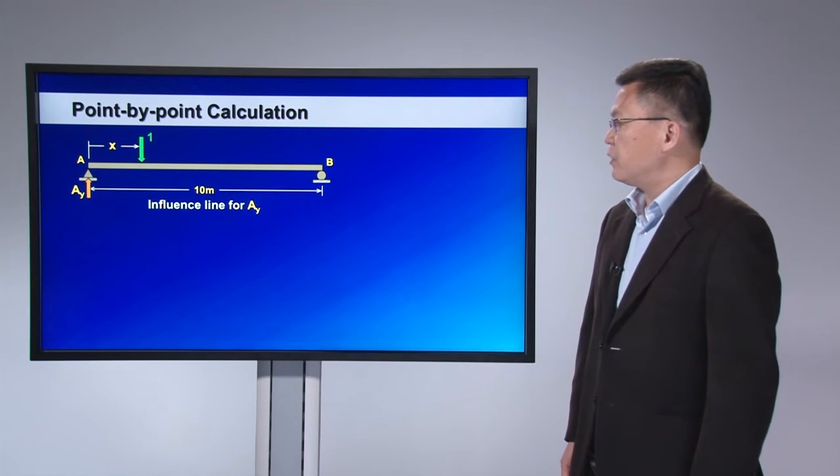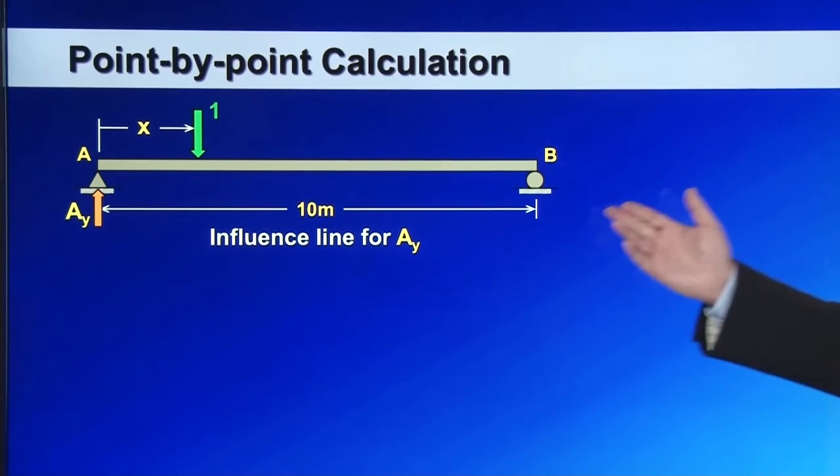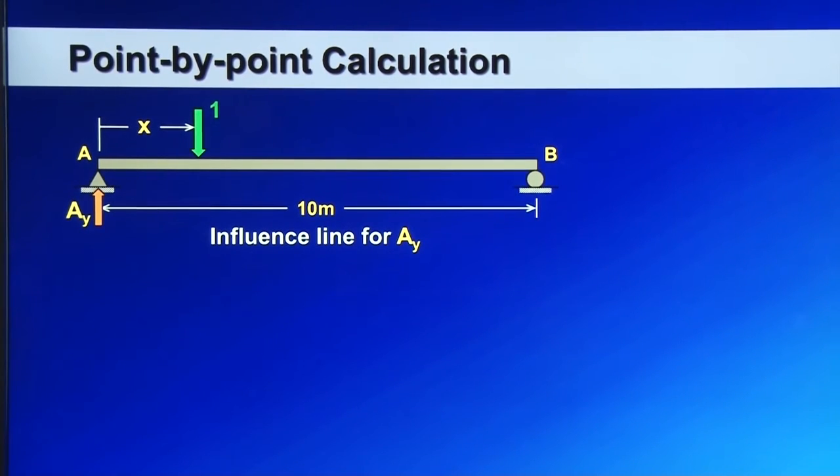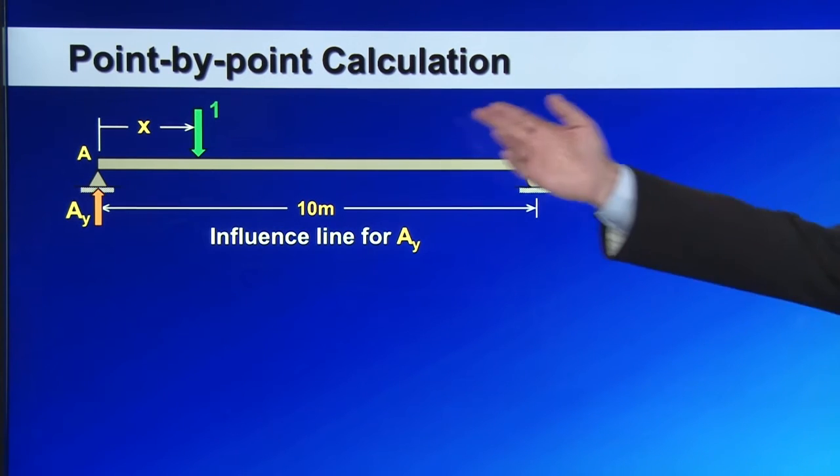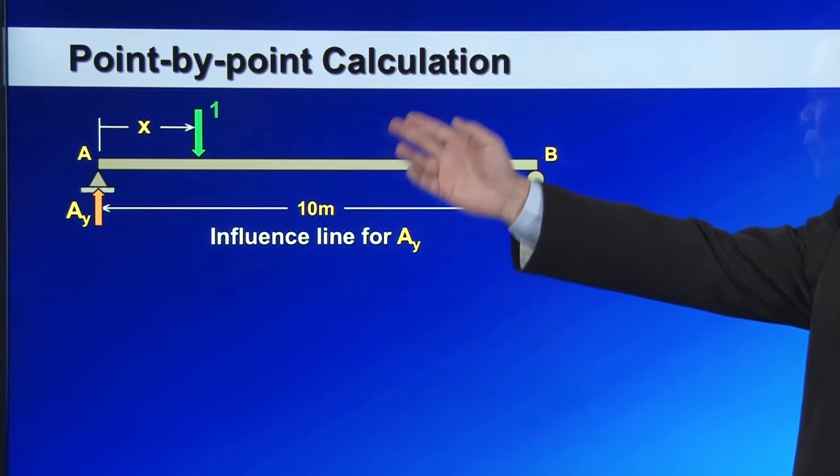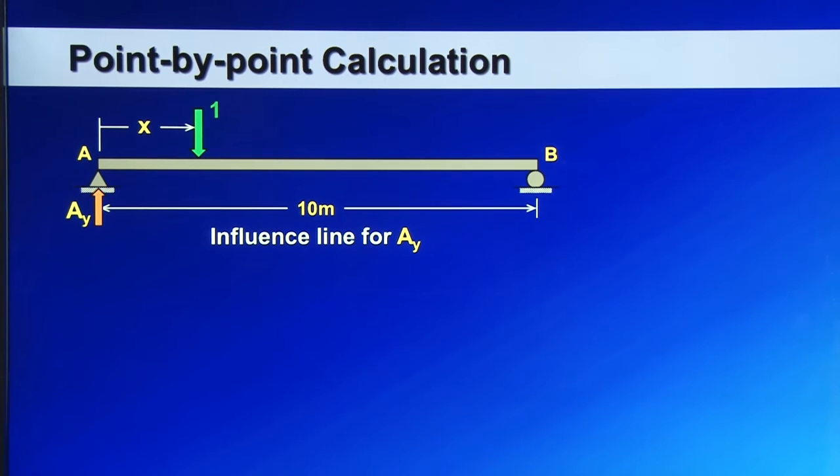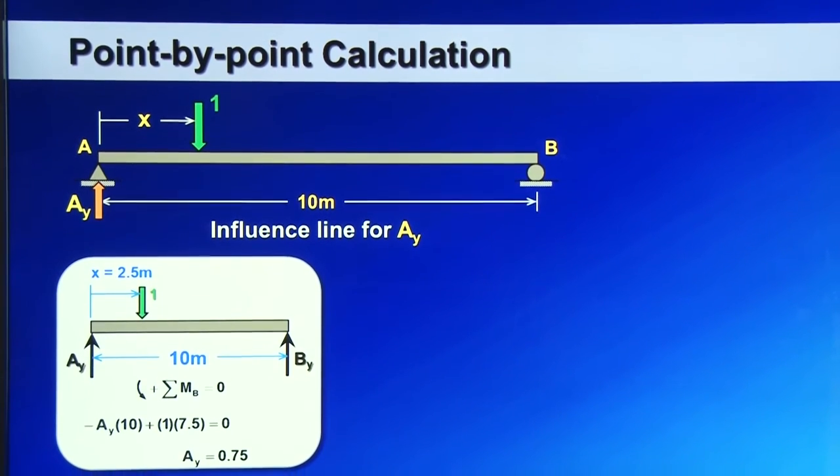First is point-by-point calculations. Now this approach basically is a summation of equilibrium calculations. So you just follow the definitions of the influence line, and then move the downward unit force from one location to another. So here are examples.